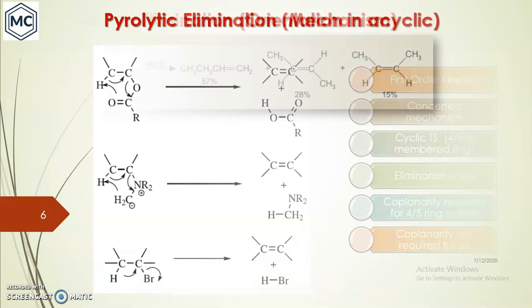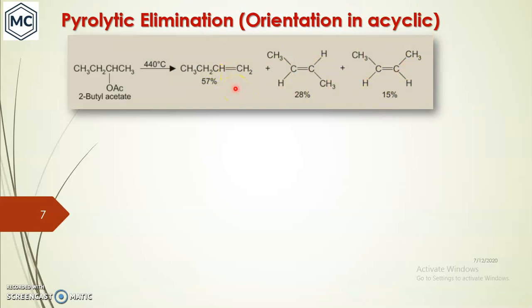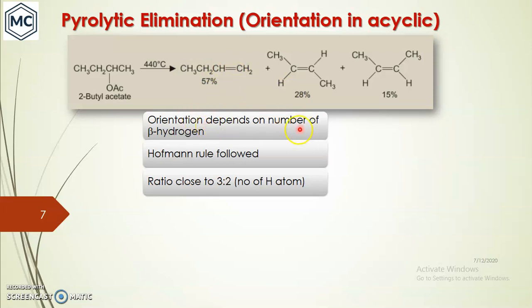Another example: a β-acetate on heating gives three types of products — first the Hofmann product (less substituted), and the other two are Zaitsev products (more substituted). The orientation of the product depends on the number of beta hydrogens: three beta hydrogens here and two beta hydrogens there, so the product ratio is close to 3:2, depending on the number of hydrogen atoms.